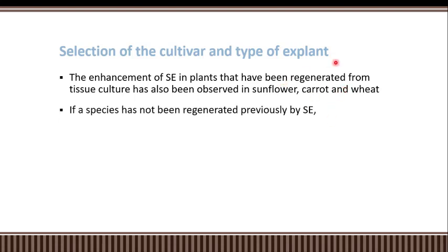Enhancement of somatic embryogenesis in plants that have been regenerated from tissue culture has also been observed in sunflower, carrot, and wheat. In these cases, the source of the explant was not a plant from the natural environment, but rather a plant previously grown in a tissue culture experiment, which then served as the explant source. This approach is not limited to the Medicago species or Fabaceae family.